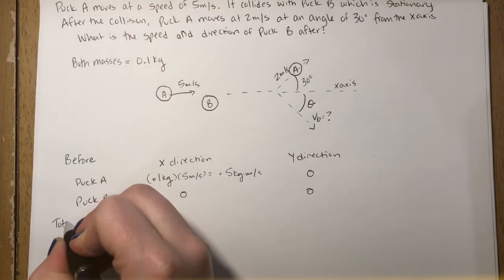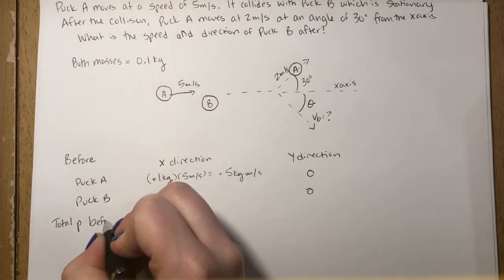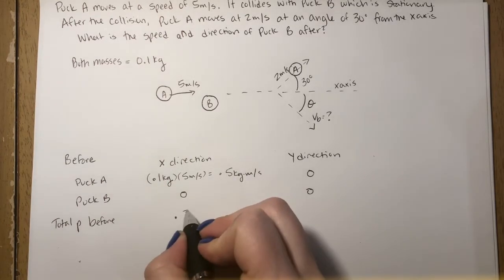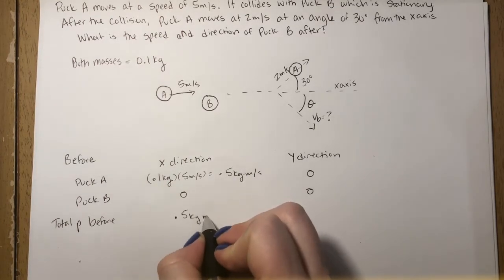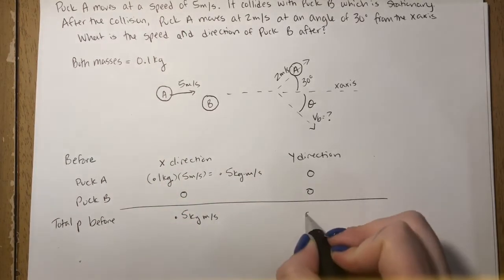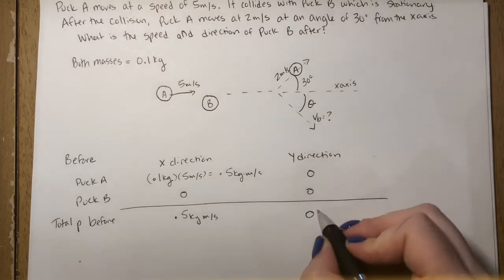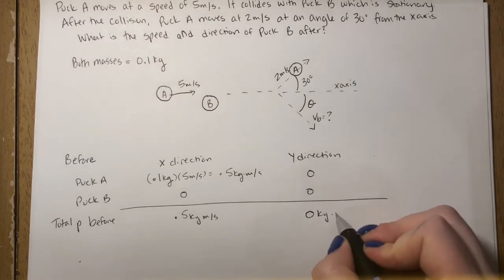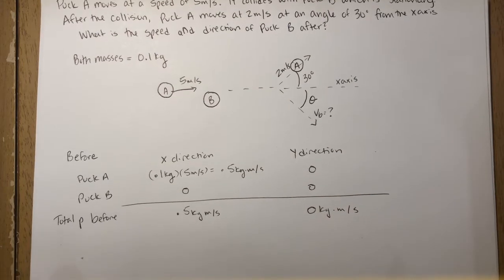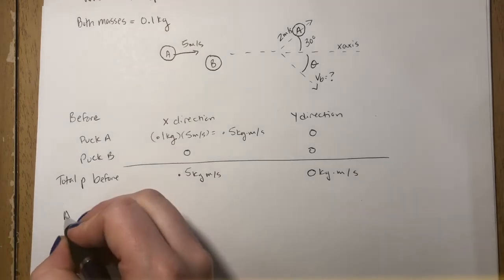Now we're going to add them together to get the total momentum before the collision. We're separating the x and the y direction. So we know that the total momentum in the x direction is 0.5, and the total momentum in the y direction beforehand is 0 kilograms meters per second.